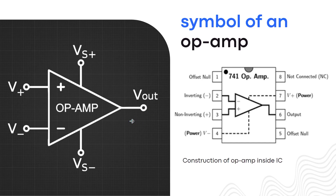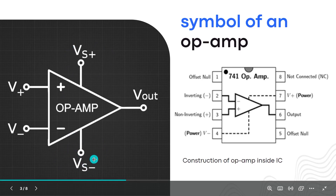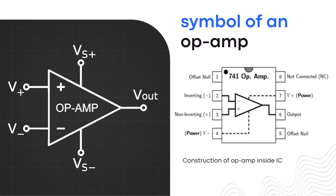Additionally, op amps have power supply pins, usually denoted as V+ and V−. Here we can see the voltage supply plus and the voltage supply minus — these are the pins where this IC takes its operating voltage. Pin number two and pin number three are the two inputs: pin two is the inverting input and pin three is the non-inverting input. Pin number six is the output terminal, and pins seven and four are the power supply pins.